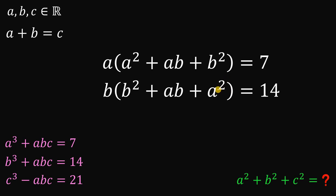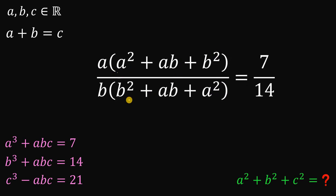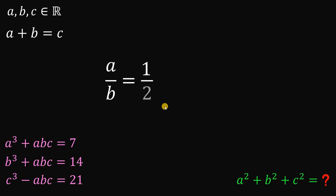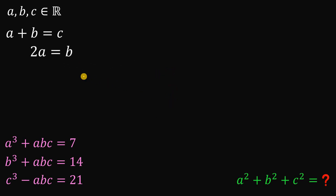To eliminate the common term, we divide these two equations. The factor a squared plus ab plus b squared cancels, giving us a over b equals 7 over 14. Since 7 over 14 equals 1 over 2, cross-multiplying gives b equals 2a. And given that a plus b equals c, if b is 2a, then c equals 3a.